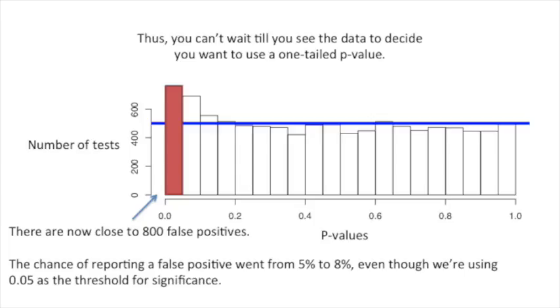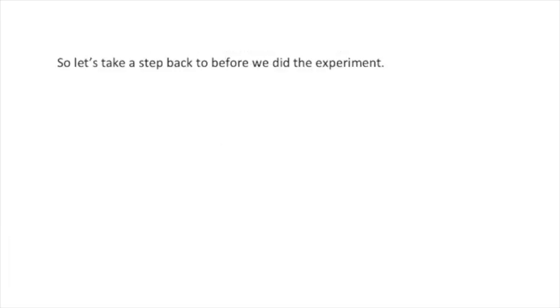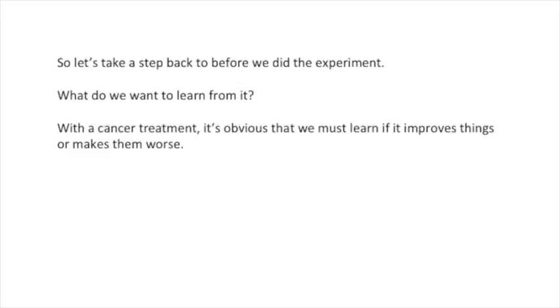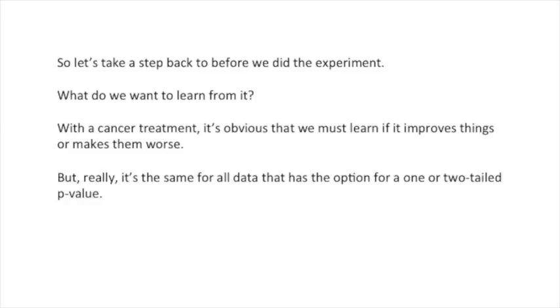Thus, you can't wait till you see the data to decide you want to use a one-tailed p-value. So let's take a step back to before we did the experiment. What do we want to learn from it? With a cancer treatment, it's obvious we must learn if it improves things or makes them worse. But really, it's the same for all data that has the option for a one- or two-tailed p-value. We always want to know both sides of the story, not just one.